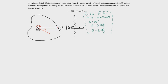Welcome back everybody. We're going to look at a dynamics problem. At the instant theta is 35 degrees, the cam rotates with a clockwise angular velocity of 3 radians per second and an angular acceleration of 3 radians per second squared. Determine the magnitudes of velocity and acceleration of the follower AB at the instant. The surface of the cam has the shape of a limacon defined by r equals 200 plus 100 cosine theta, where r is in millimeters.